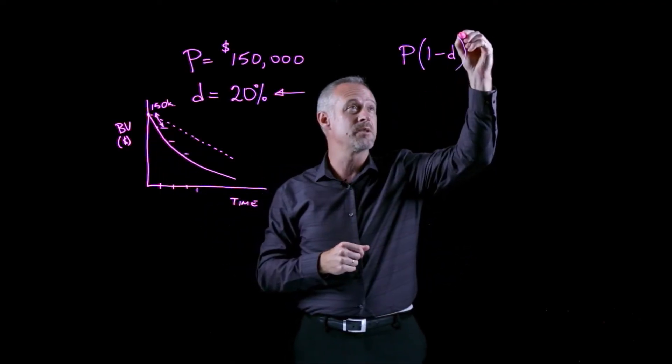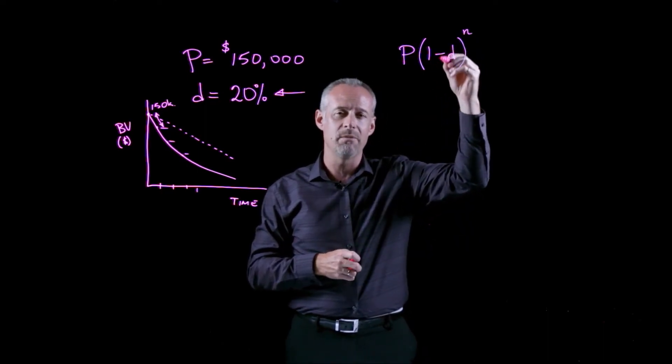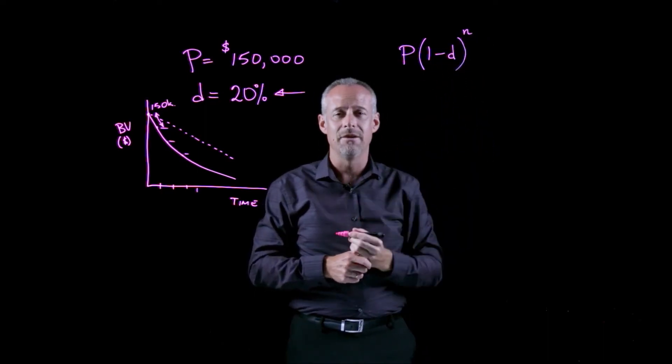really all we're doing is raising this to the power of n. So we're multiplying by 0.8 n number of times.